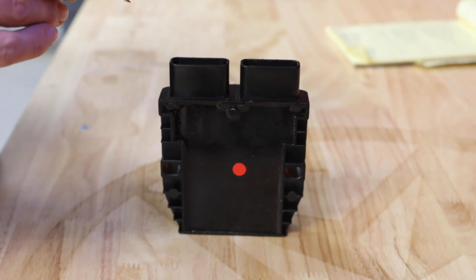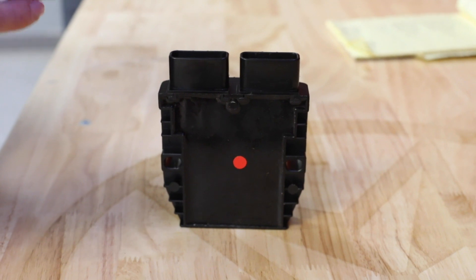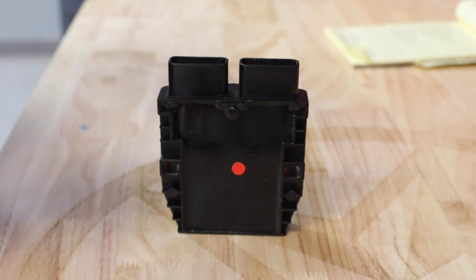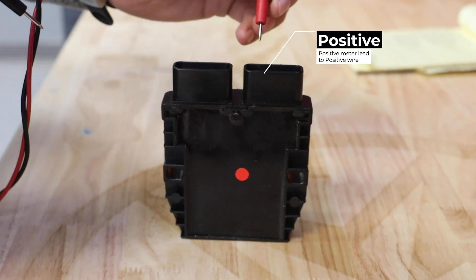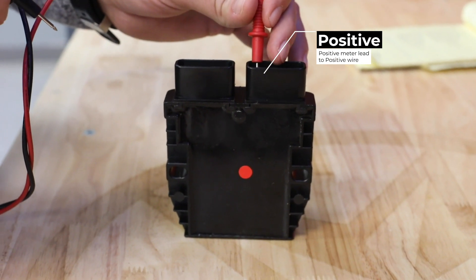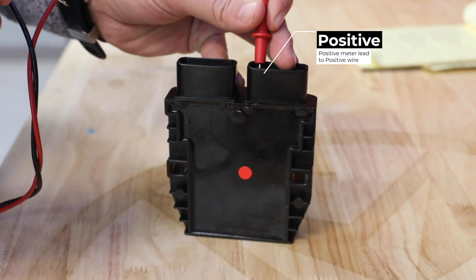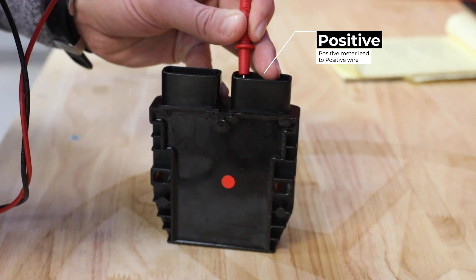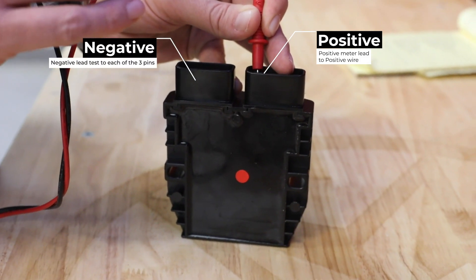Now we're going to do what we call a reverse bias test. So we're going to go ahead and flip our meter leads. We're going to put our positive meter lead on our positive wire for the regulator, and then we're going to go across our pins with our negative meter lead.